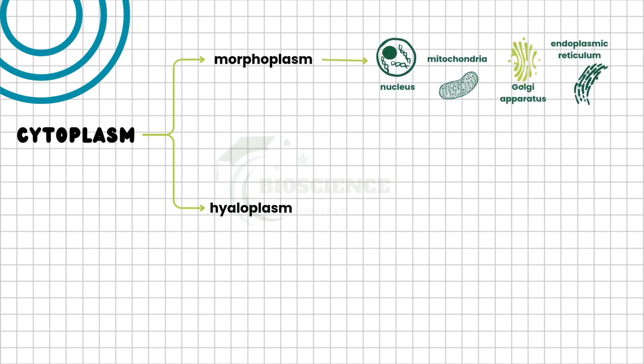The morphoplasm corresponds to the organelles within the cytoplasm, such as the nucleus, mitochondria, Golgi apparatus, endoplasmic reticulum, and others.